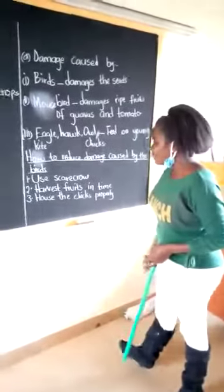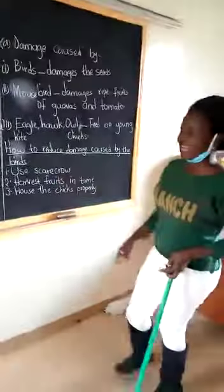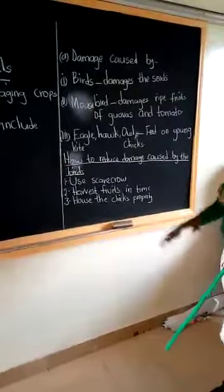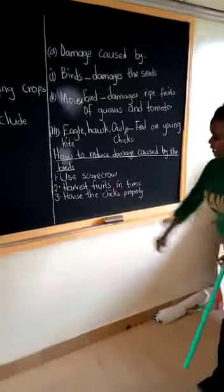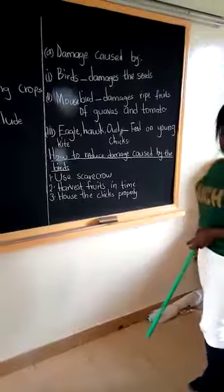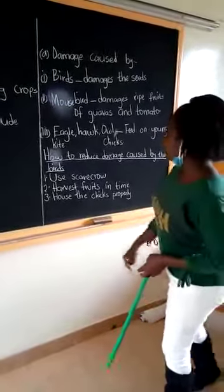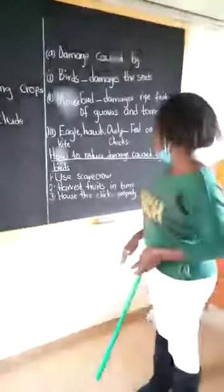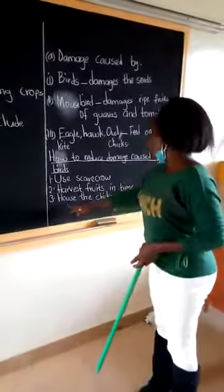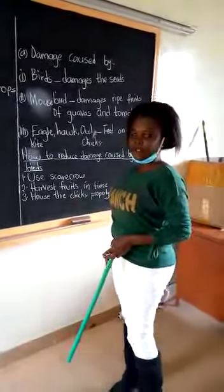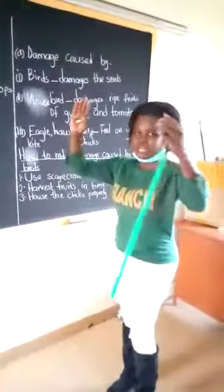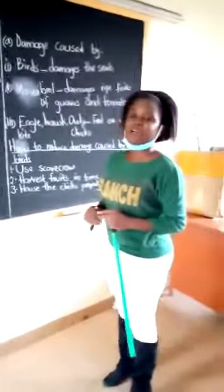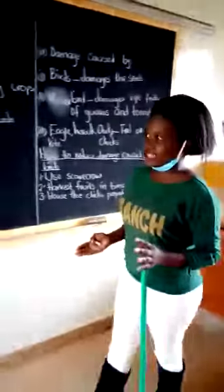The first one is making a scarecrow — you make the scarecrow. The second one is to harvest fruits in time. Another one is about the hawk taking our chicks: you will house the chicks properly, you put them in a good house, so that when the hawk comes, you will find our chicks are well protected.